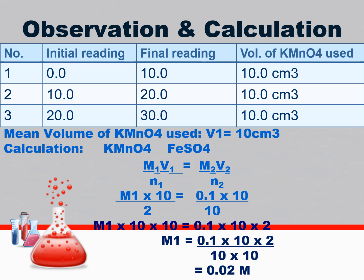Now calculate the molarity of KMnO4 using the formula: M1V1/n1 = M2V2/n2. Here n1 and n2 come from the balanced chemical equation. Put in all the values and you can find the molarity. The molarity of KMnO4 is found to be 0.02 molar.